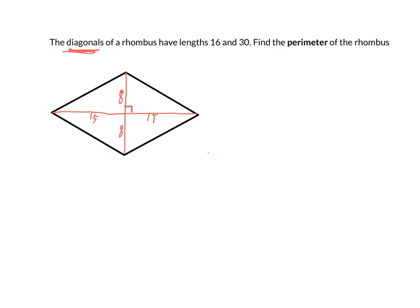They're 8 by 15—the two legs are 8 and 15—so all four of those triangles are congruent to each other. So to find the perimeter of the rhombus, we just need to find the length of one of those sides and then multiply that by four because all four are the same.